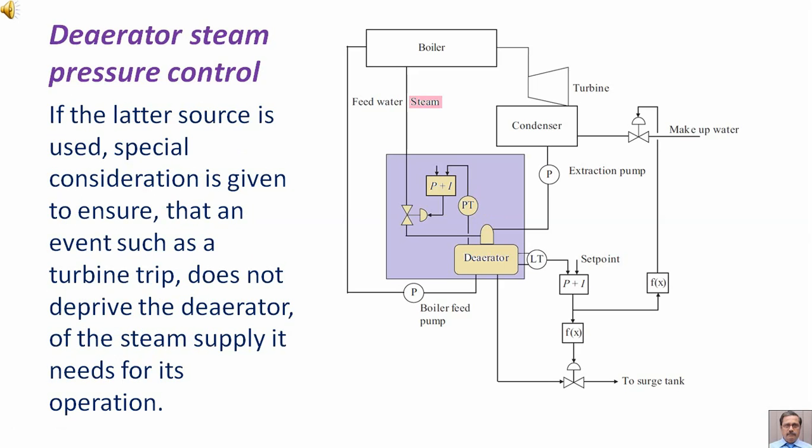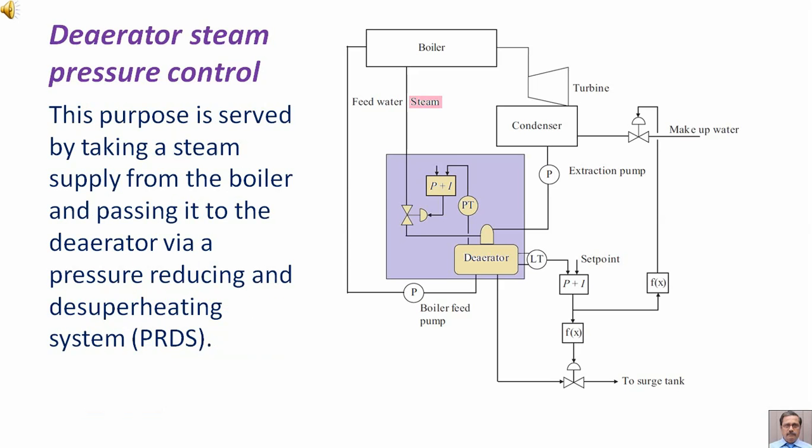If the latter source is used, special consideration is given to ensuring that an event such as a turbine trip does not deprive the deaerator of the steam supply it needs for its operation. This purpose is served by taking a steam supply from the boiler and passing it to the deaerator via a pressure-reducing and de-superheating system, PRDS.